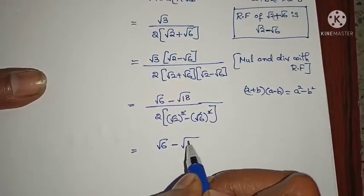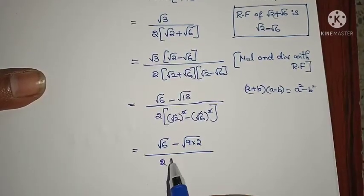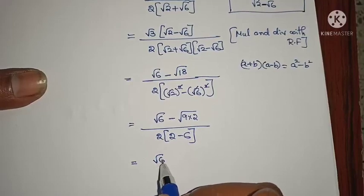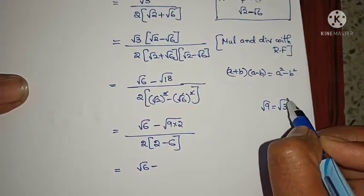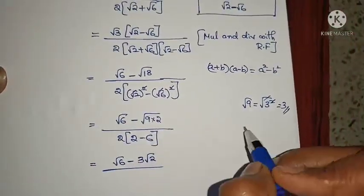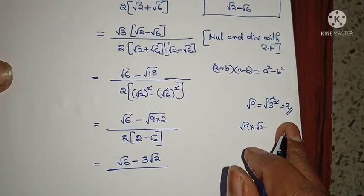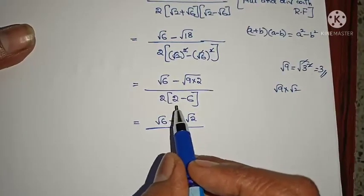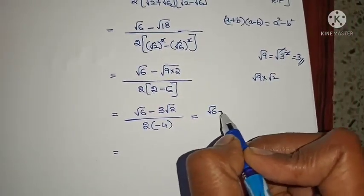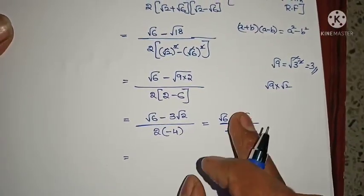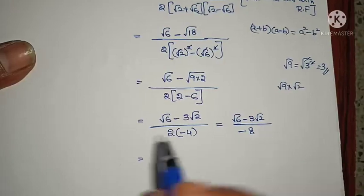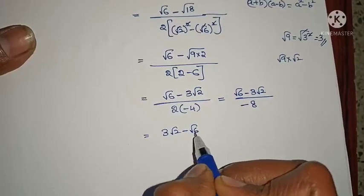For √18, I can write it as √(9 × 2) = √9 × √2 = 3√2. So the numerator is √6 − 3√2, divided by 2 × (−4) = −8. Since there's a minus in the denominator, multiplying the numerator by minus: minus 3√2 becomes plus 3√2, and plus √6 becomes minus √6. The answer is (3√2 − √6) / 8.